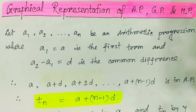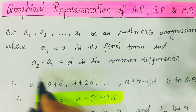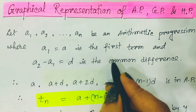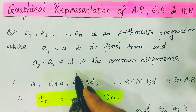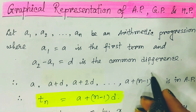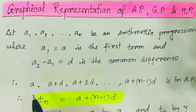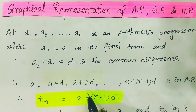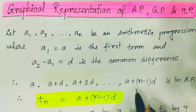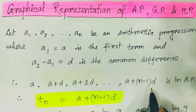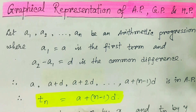What is AP? Let a1, a2, ..., an be an arithmetic progression. Here a1 is the first term and a2 minus a1 is d, that is the common difference. So the sequence can be written in the form: a, a+d, a+2d, and so on. The nth term is a plus n minus 1 into d.